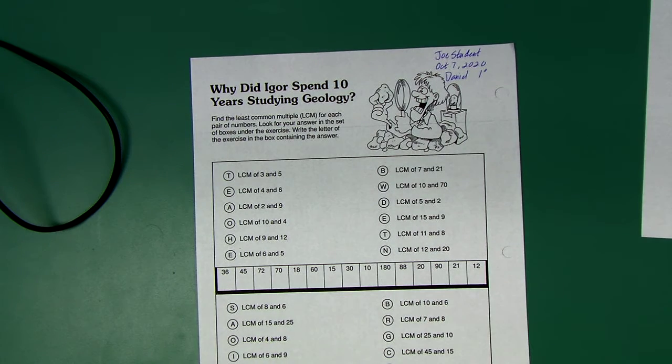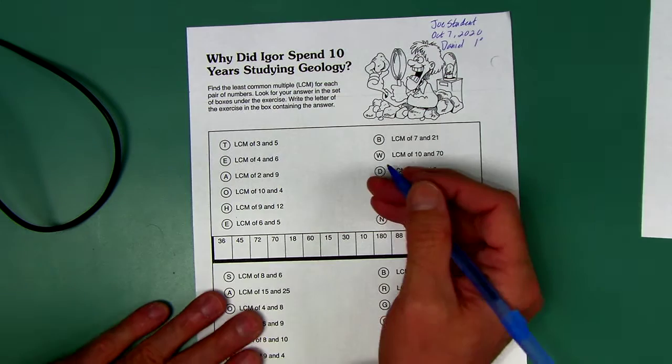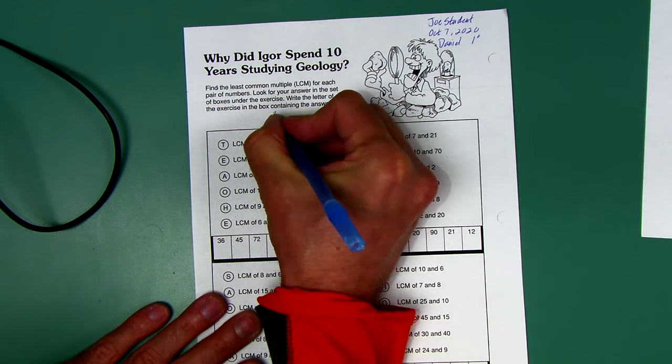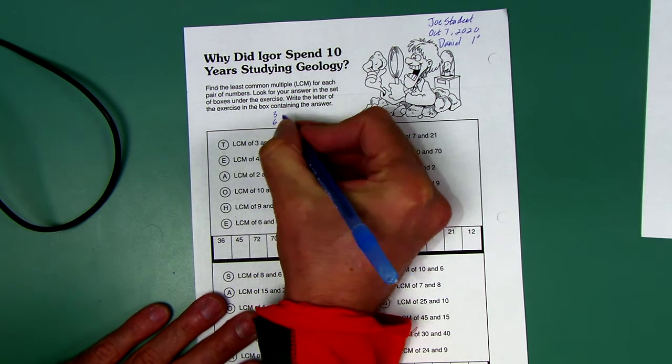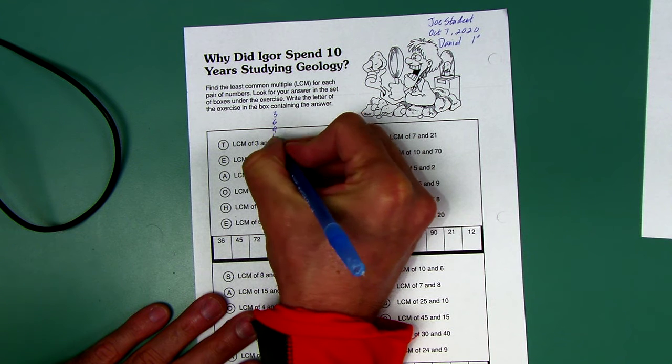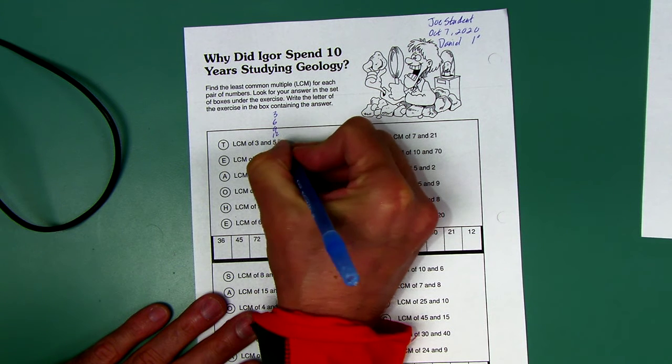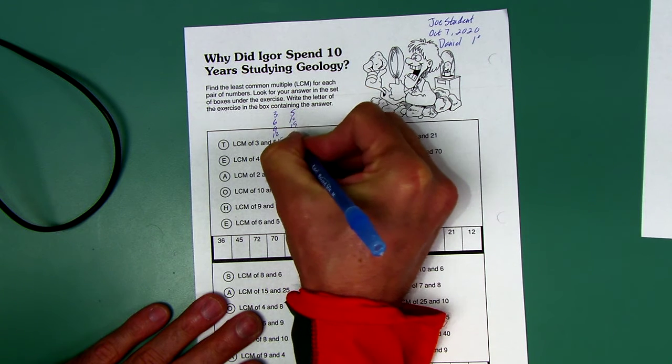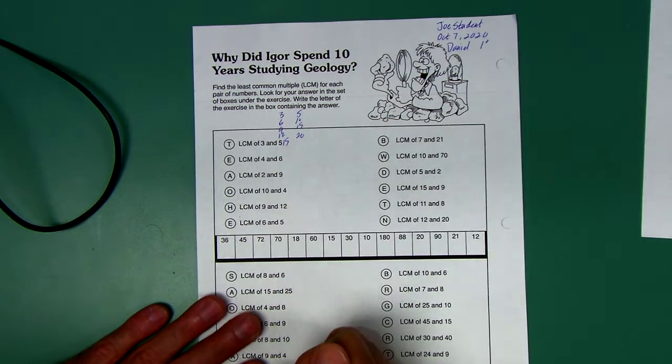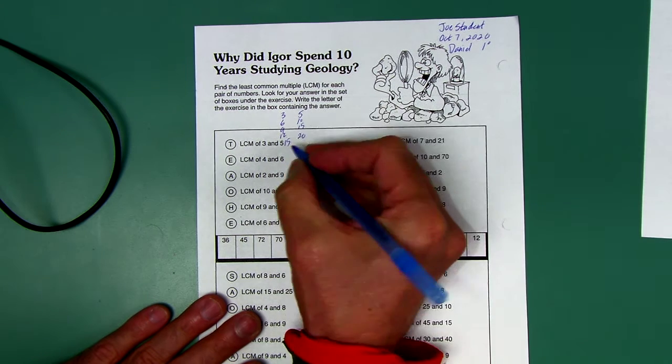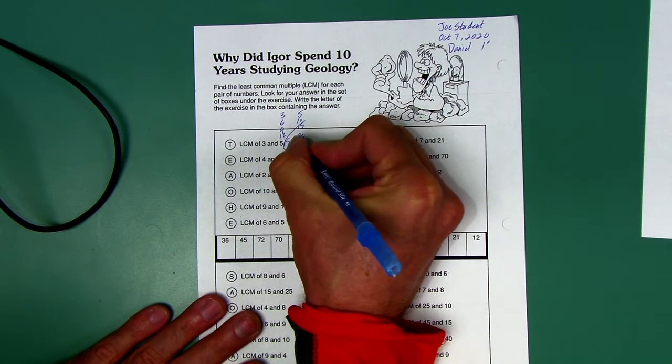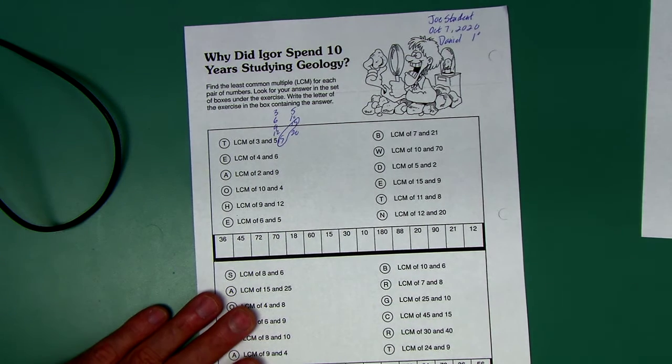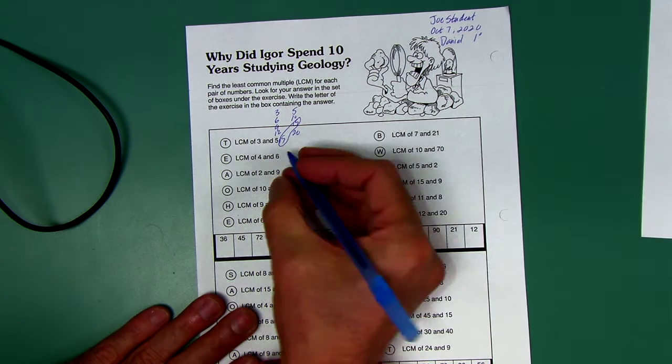This is all about the least common multiple. Remember what multiples are, just what they sound like. Multiples of three are three multiplied by one, three multiplied by two, three multiplied by three, and so on. Multiples of five count by five: 5, 10, 15, 20. You make a list and go up, looking for which one is common or the same. The least common multiple of three and five is fifteen.